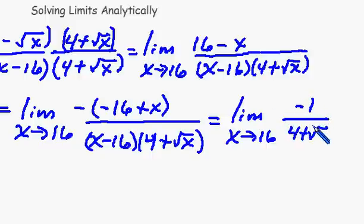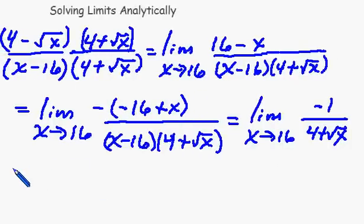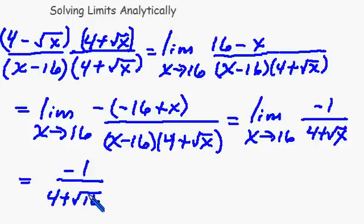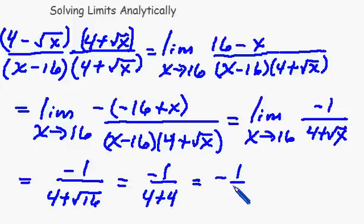Now what we can do is do our direct substitution now by taking the 16 and plugging it directly into the square root of x. So we have 4 plus the square root of 16. We simplify this down to negative 1 over 4 plus 4, which becomes finally negative 1 eighth. So that's our answer, negative 1 eighth.